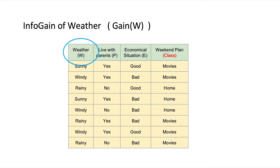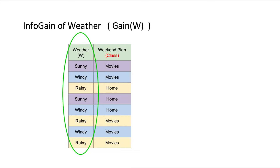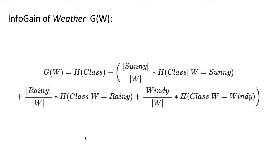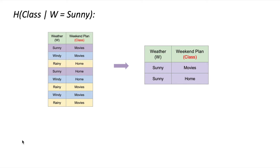Now let's calculate the information gain for weather. We just need the class column and the weather variable column. I'm using colors to distinguish the different values: purple rows are for sunny, blue rows are for windy, and yellow rows are for rainy. We will use those rows to calculate the conditional entropies.